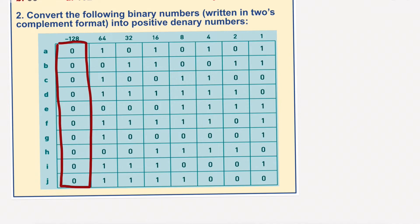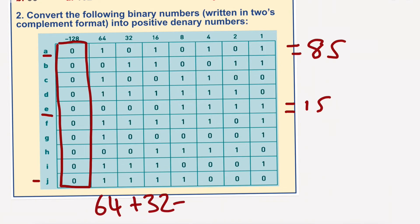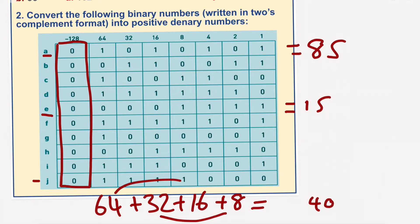I'll do a few of these - we're just adding things up. 64 plus 16 equals 80, plus 4, plus 1 equals 85 for A. For E, let's do that one - easy one. 8 plus 4 is 12, plus 2, plus 1 - obviously that one is 15. And if we do the bottom one, J, we've got 64 plus 32, plus 16, plus 8, equals 120. Dead easy - they're all positive, everything's good.